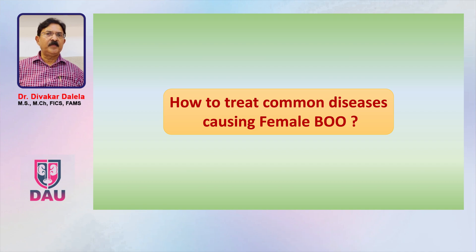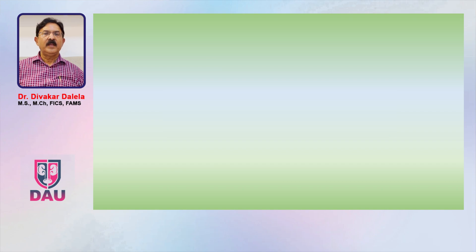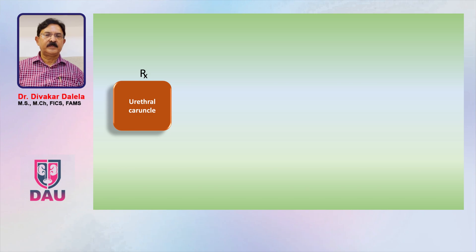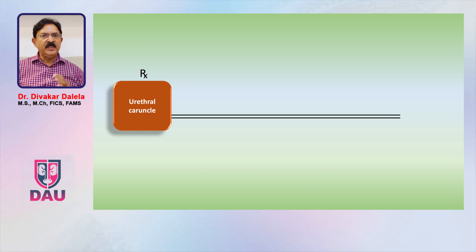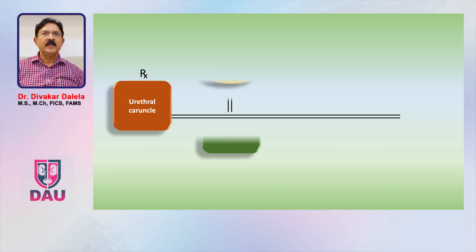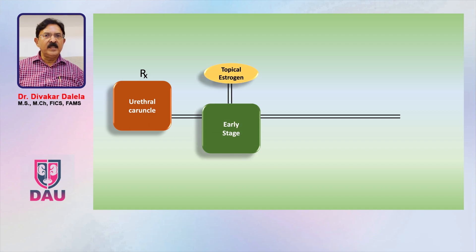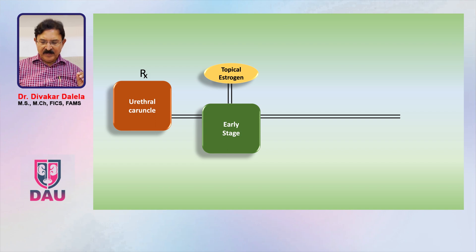I'm touching upon some common conditions of female bladder outlet obstruction. Suppose you have a urethral caruncle — looking at the natural history of progression, a patient comes in the early stage with a small, pea-sized caruncle that is not very infected and not very ulcerated. You can manage this with topical estrogen.